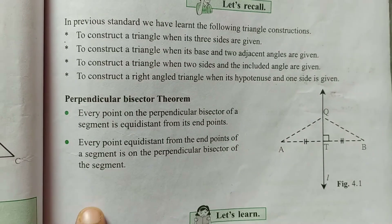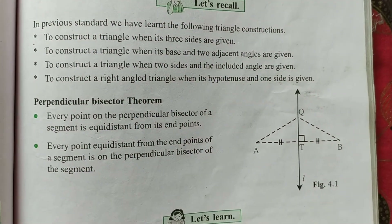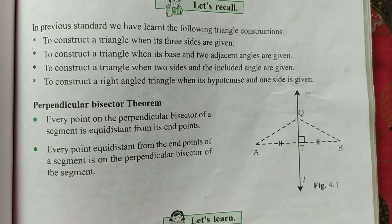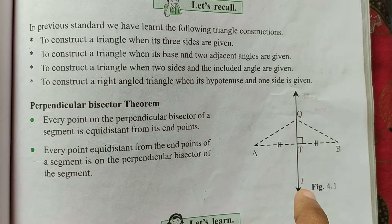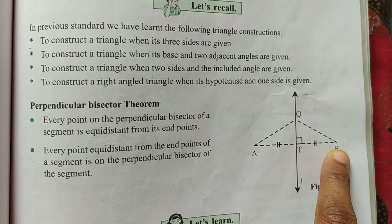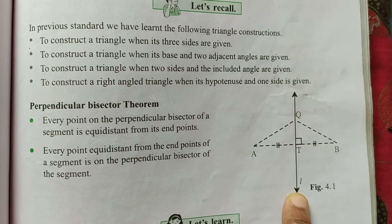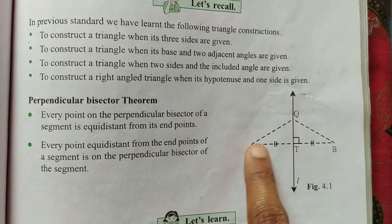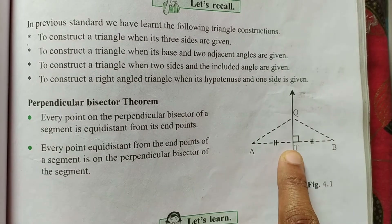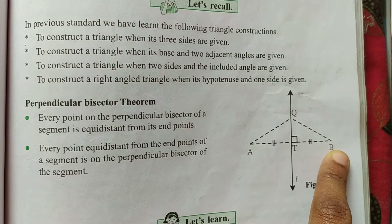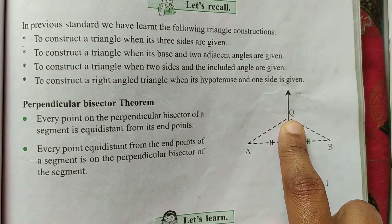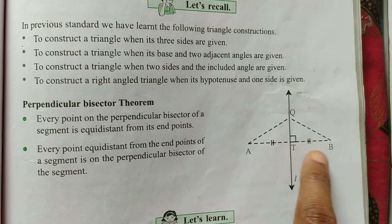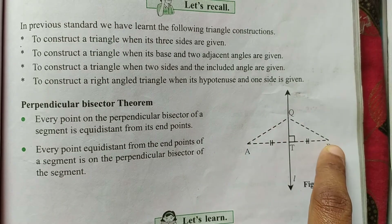Now, what are the two statements? First one: every point on the perpendicular bisector of a segment is equidistant from its endpoints. That means, suppose AB is a line segment and you have drawn a perpendicular bisector QT to it. QT has divided AB exactly into two equal parts, that's AP and TB. Now every point which lies on this perpendicular bisector — for example, Q is a point lying on it — it is equidistant to the two endpoints, meaning QA is congruent to QB.